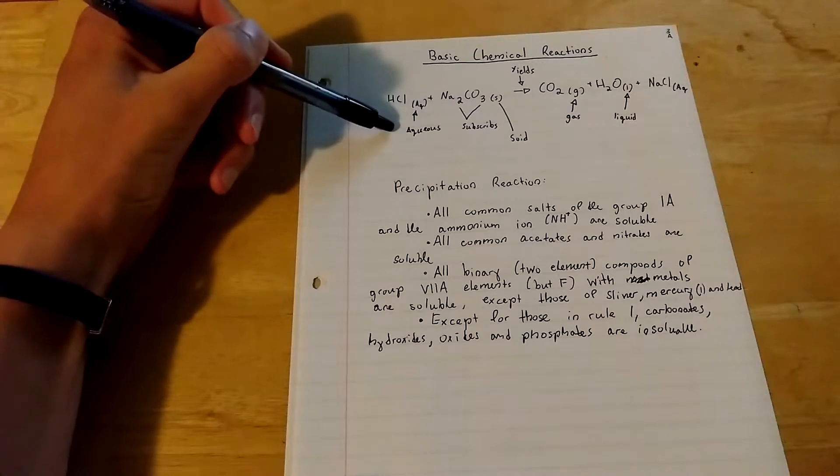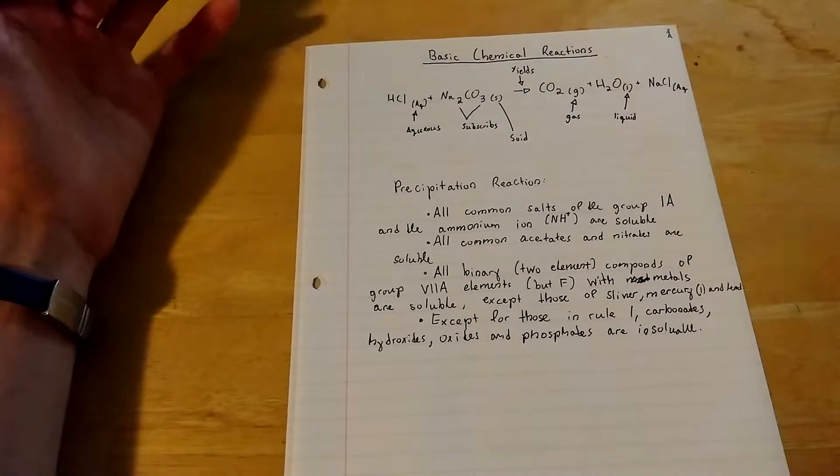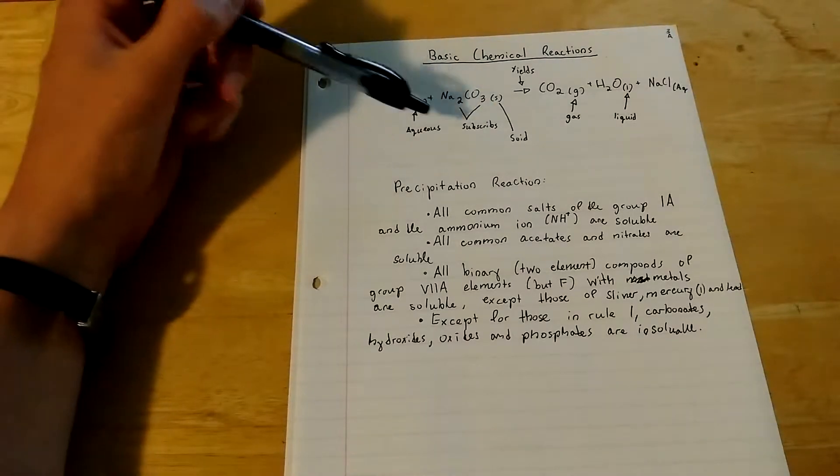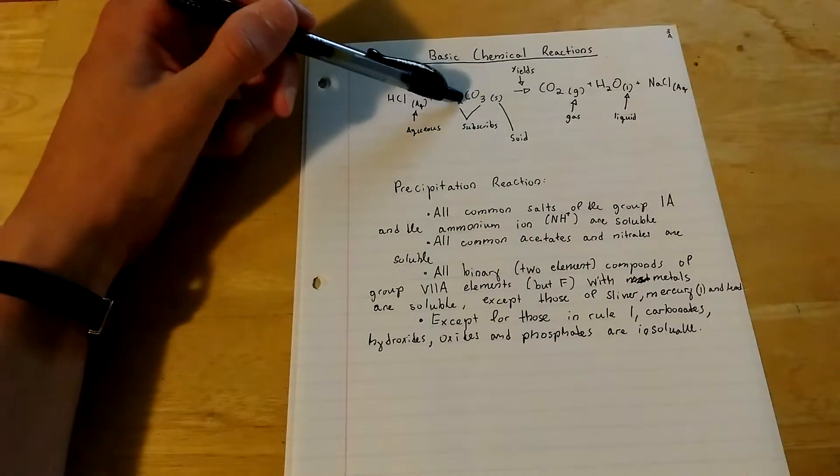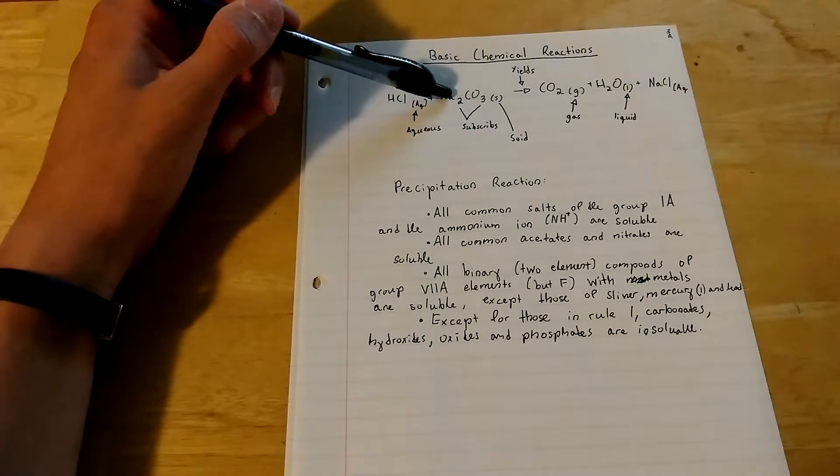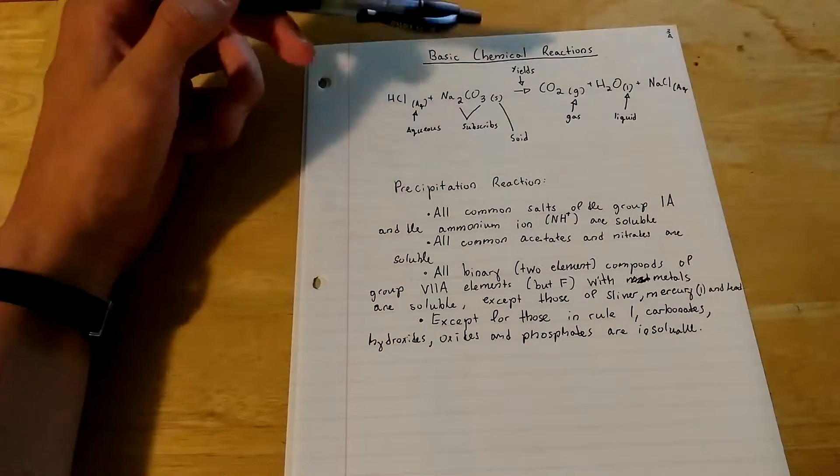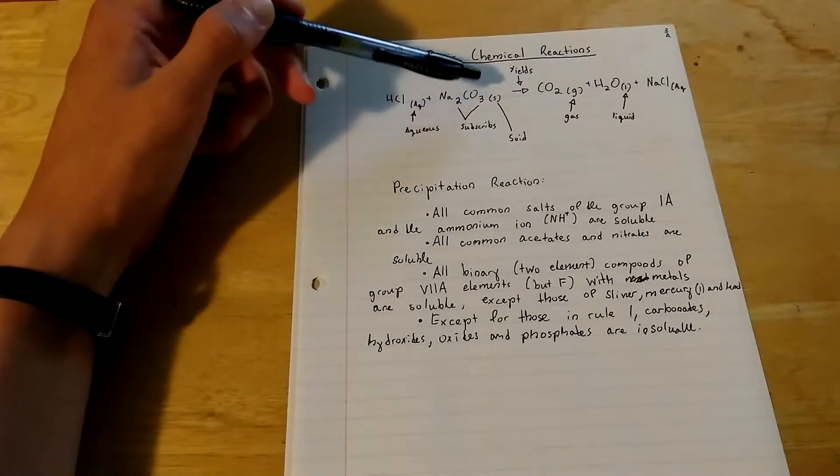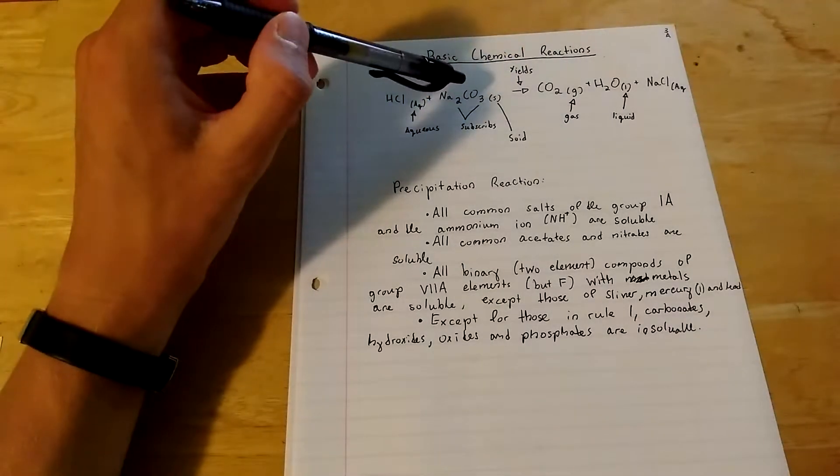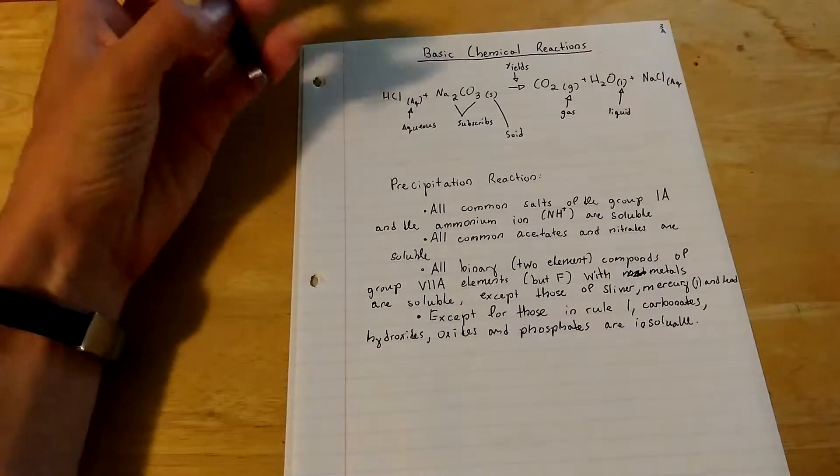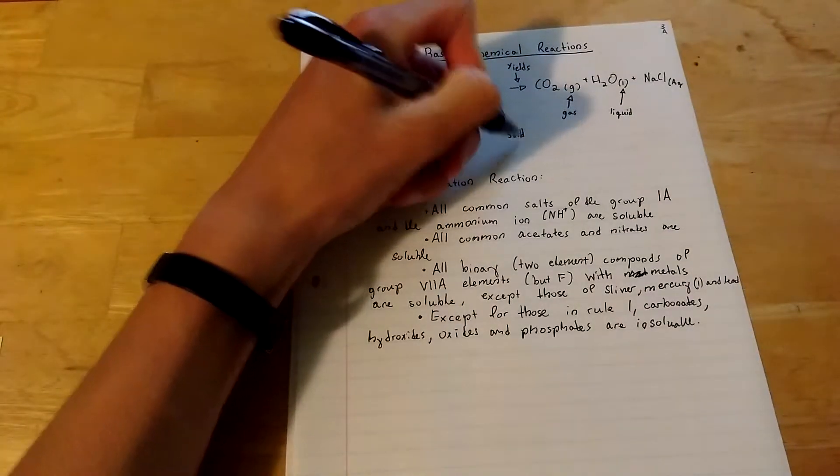Okay, so aq, aqueous, that means it is dissolved in water, or can be. The subscripts, like the Na2, that represents that you have two atoms of sodium, and you have three of carbonate. Solid, not soid, solid.